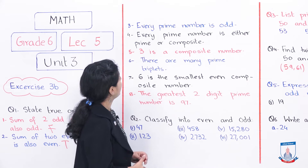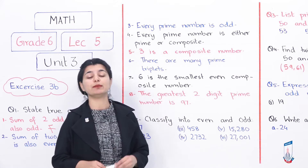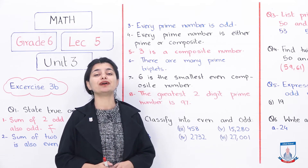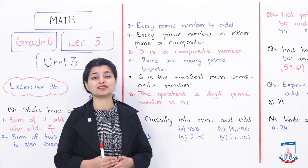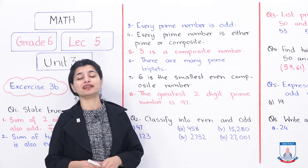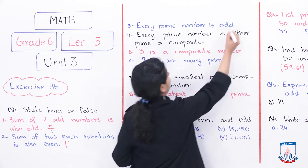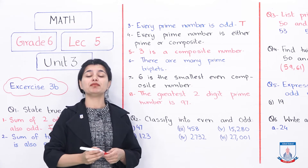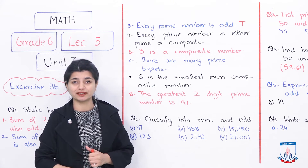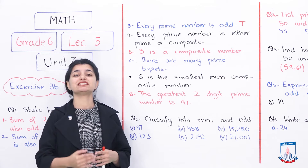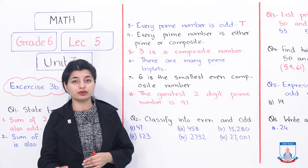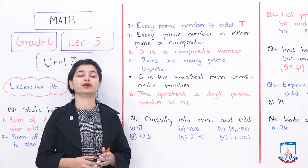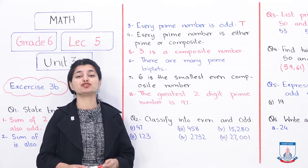Looking at the third statement: every prime number is odd. Prime numbers have only two factors — one and the number itself. Prime numbers are not divisible by 2, which makes them odd. If a number is divisible by 2, it would be called a composite number, not a prime number. So all prime numbers are odd, and this statement is true.